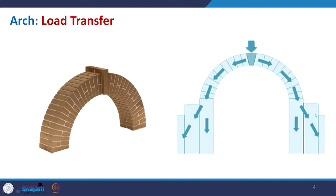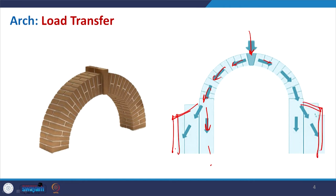The load imposed on the arch is transferred symmetrically and transferred to the ground. If your wall is not capable of doing this, you can use flying buttresses or other supports to distribute the load — symmetry is very important. In 3D form you can see how the bonding is made, and this particular dimension is basically your rise.